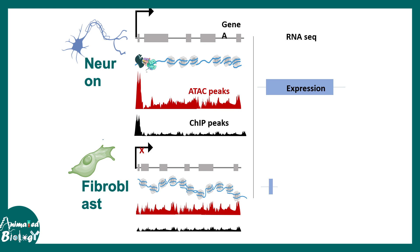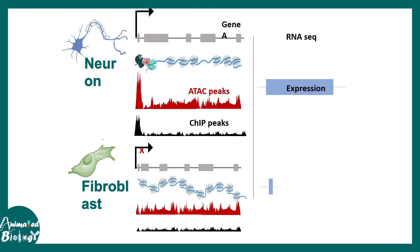ChIP-seq can also be combined with RNA sequencing, which looks for all the transcripts of a particular gene in a global, genome-wide context — it's a transcriptomic technique. Combining all this data, we can get deeper insight. In this example, neurons and fibroblasts are compared for gene A expression. You can see there is a strong ChIP peak for a particular transcription factor, showing that it binds to a particular region of the DNA. The ATAC peaks are very similar to the ChIP peaks, and ATAC peaks indicate greater chromatin accessibility.